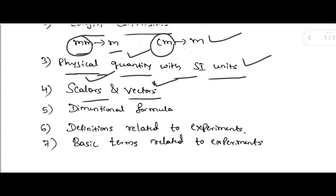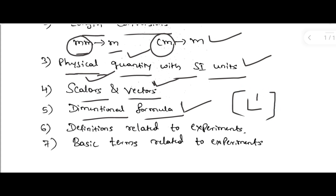The next topic is dimension formula. Any physical quantity has a dimension formula, and you have to know how to find it. For example, for length, the dimension is L to the power 1, with mass and time both having power 0.